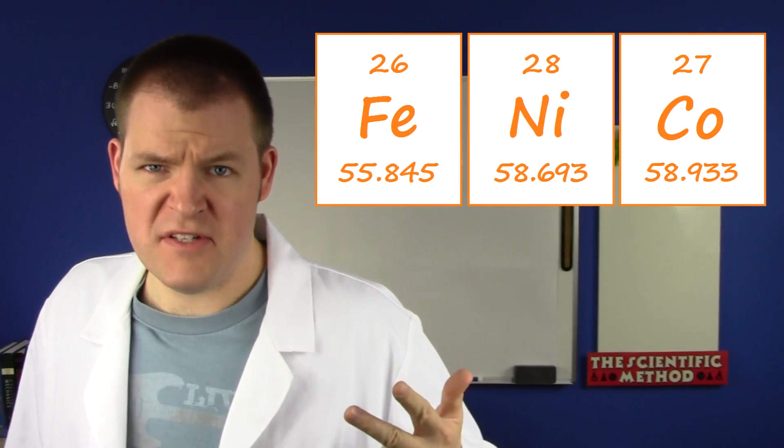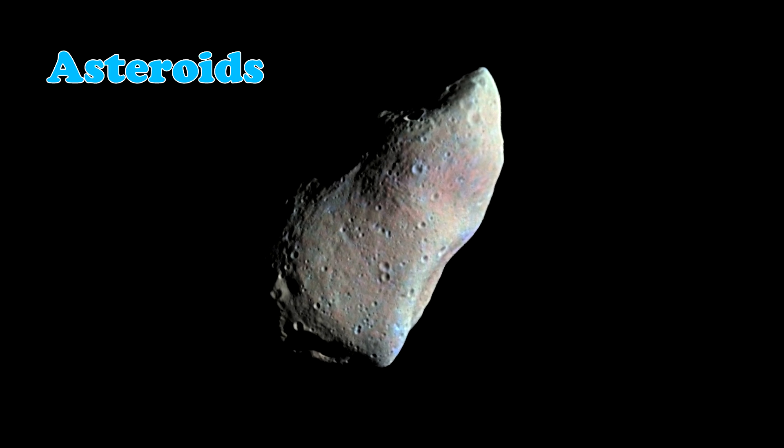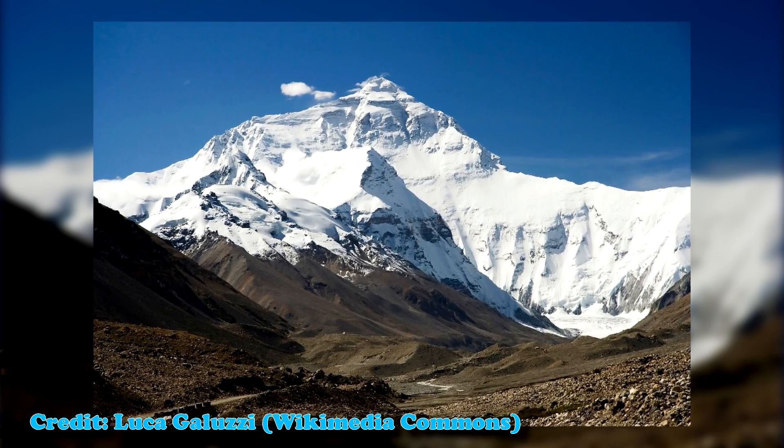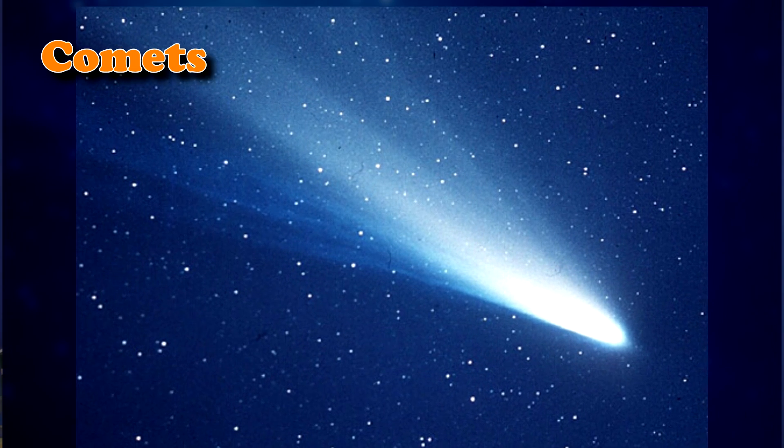They're all composed almost entirely of iron, nickel, and cobalt, and they usually have very irregular shapes. What we usually call asteroids range anywhere from the size of a semi-truck to the size of Mount Everest. Comets are just asteroids with a layer of ice on the outside, so nothing special.